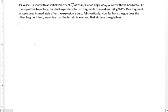All right, chapter 9, problem 13. We have a shell that's shot with initial velocity of 20 meters per second at an angle of 60 degrees with the horizontal. At the top of the trajectory, the shell explodes into two fragments of equal mass. One fragment whose speed immediately after the explosion is zero falls vertically. How far from the gun does the other fragment land, assuming the terrain is level and air drag is negligible?